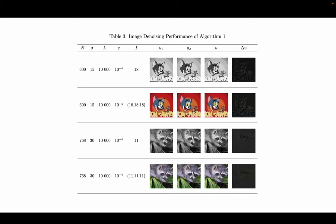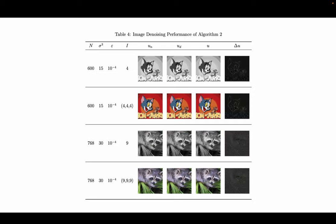And in table 3, we compare how much iterations it takes to denoising an image with algorithm 1. And in table 4, we compare the number of iterations needed to denoising the image with algorithm 2. As you can see here, algorithm 2 is much faster. It takes less iteration than algorithm 1.